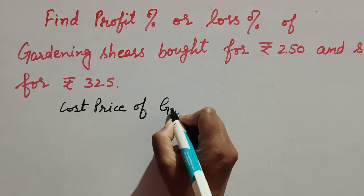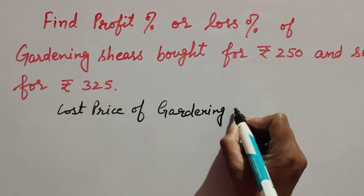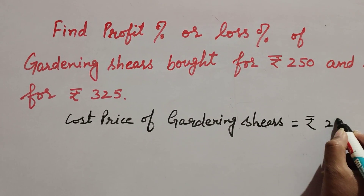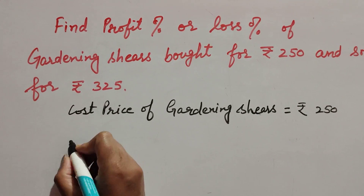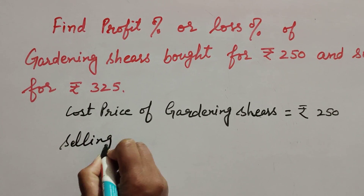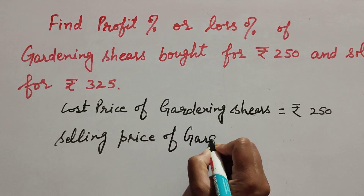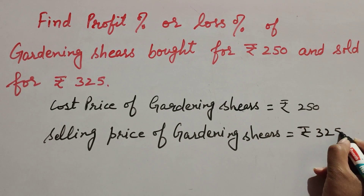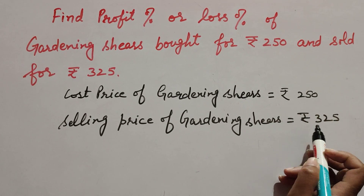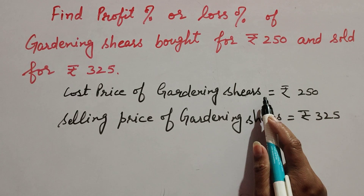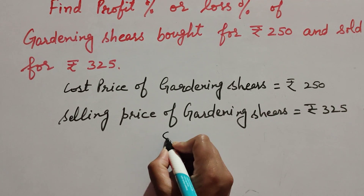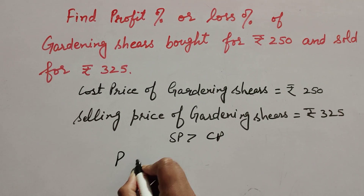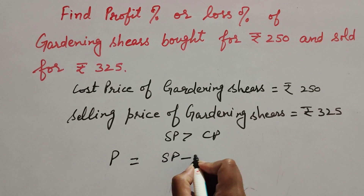Cost price of gardening shares is equal to rupees 250, and selling price of gardening shares is equal to rupees 325. Since selling price is greater than the cost price, we get profit. Profit is equal to SP minus CP.